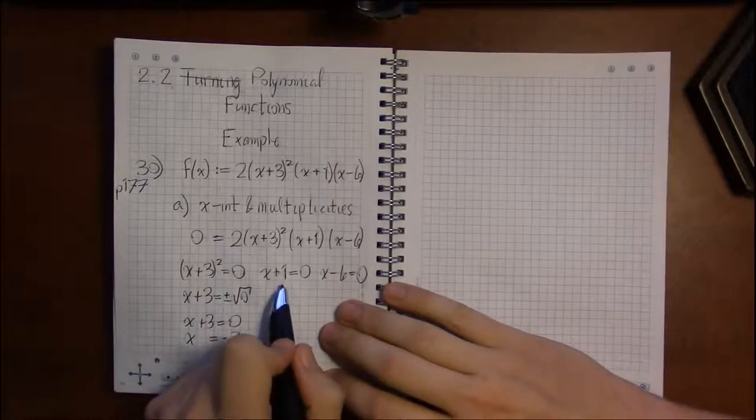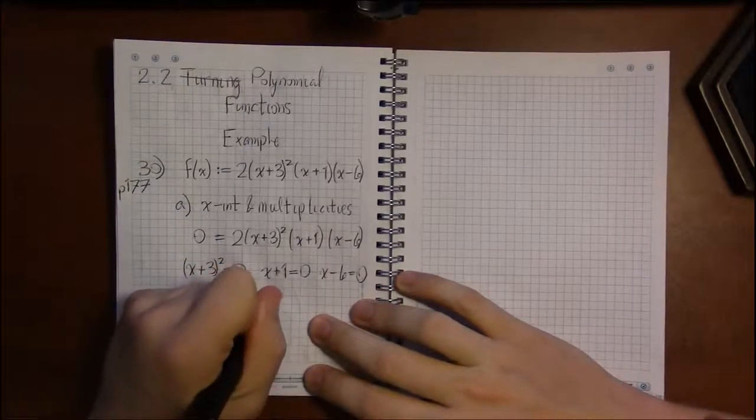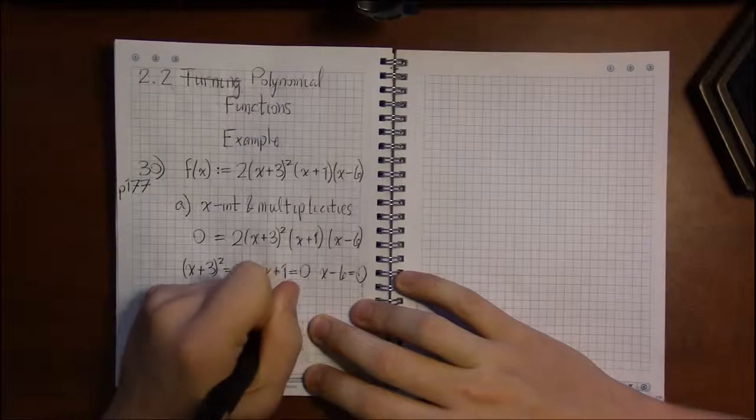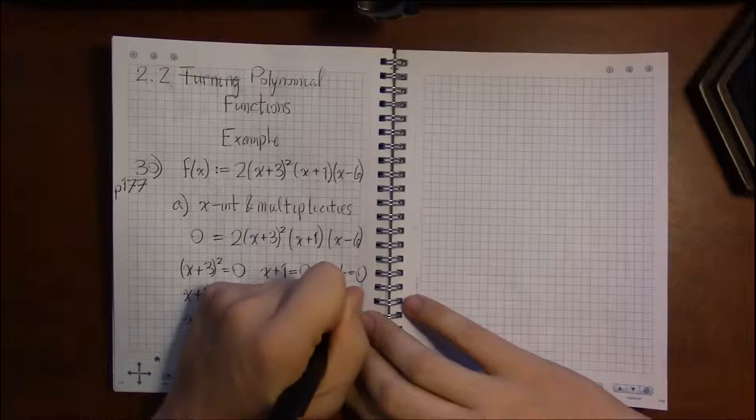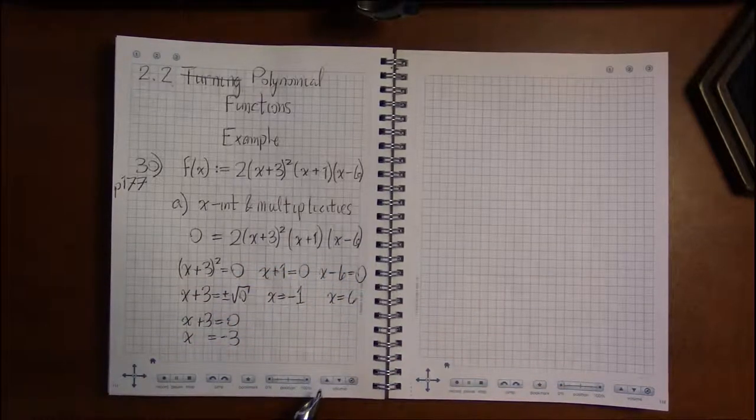That's our first x-intercept. The other two are fairly simple. Here we just subtract 1 from both sides, and in the third equation, we're going to add 6 to both sides.